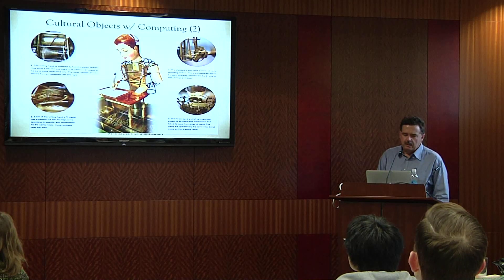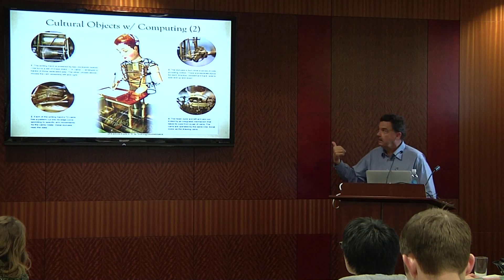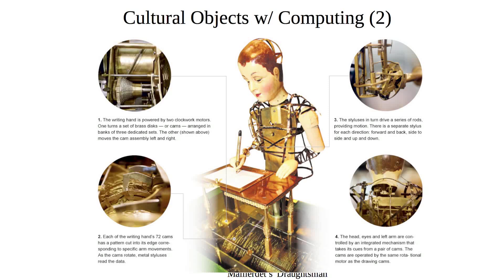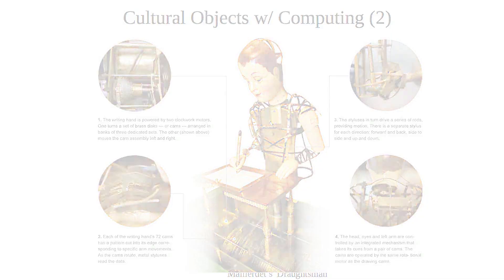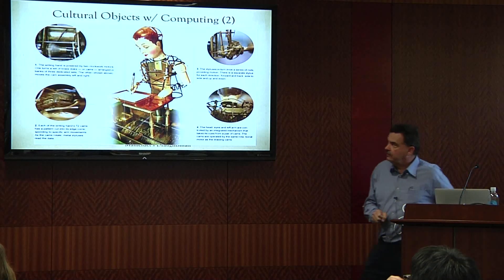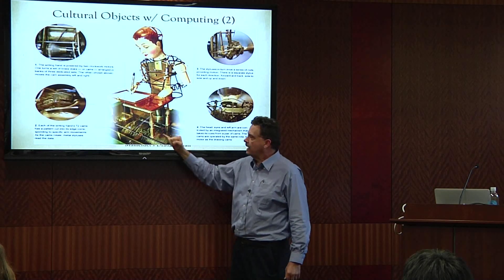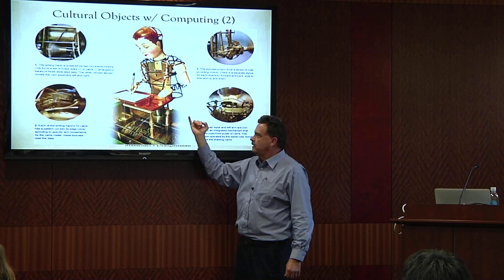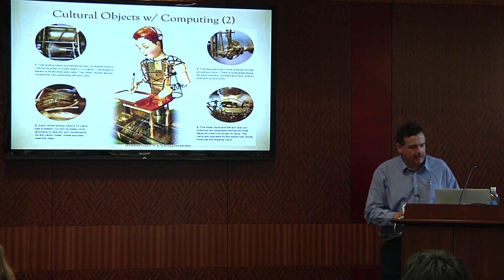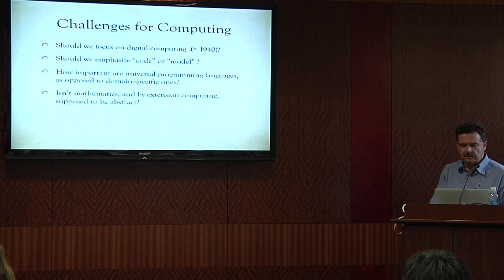Automata represent an unbelievably rich set of devices created over an extremely long period. The Draftsman automaton was featured in Martin Scorsese's film Hugo. It has a long camshaft that is essentially a mechanical program — creating a program with cams. You've got input and output. Whenever you've got gears, you've got multiplication and addition — all that calculation going on within the gear train. Lots of culture, lots of computing, lots of mathematics.